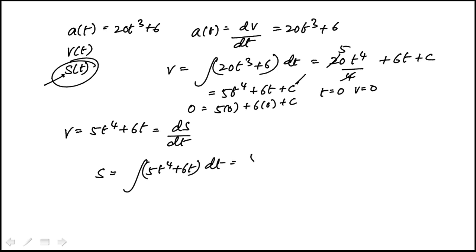And that becomes 5 times t to the 5 over 5 plus 6t square over 2 plus the constant of integration. So that's t to the 5 plus 3t square plus the constant of integration. Now we're told that the position of the particle is 7 when t is 0.